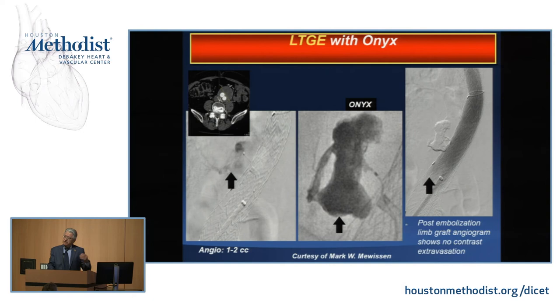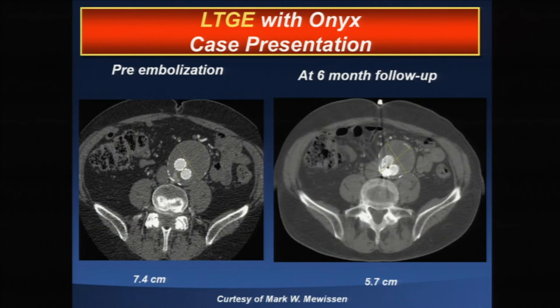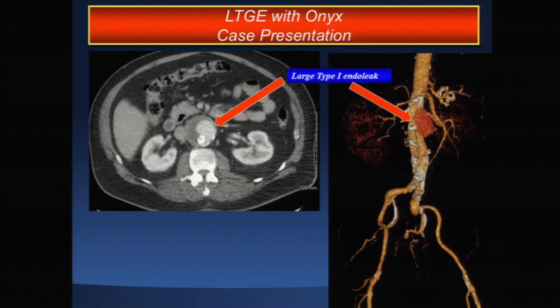Dr. Mewissen was initially concerned there might be a leak through the 0.9 millimeter perforation and placed a small iliac extension, but found it was unnecessary. Cases show the aneurysm can decrease in size rapidly with very good results. We have used this technique not only for type 2 endoleaks but also type 1, since it can be almost impossible to come from above and fill that cavity otherwise. We have also applied it to thoracic stent grafting where other approaches are difficult.